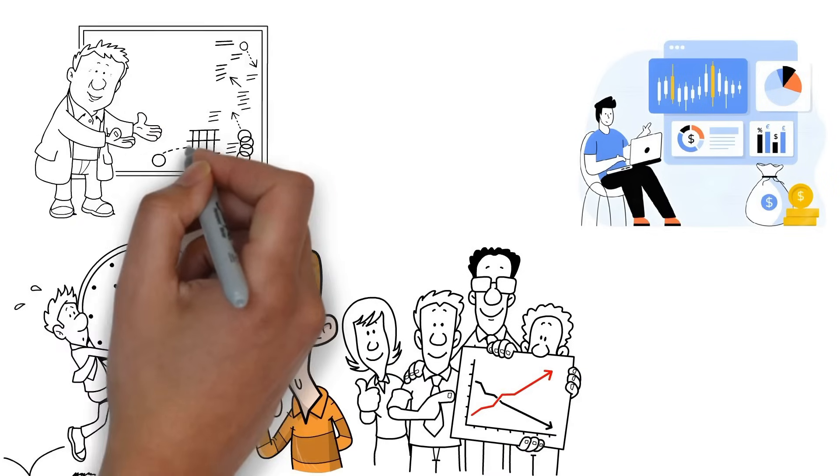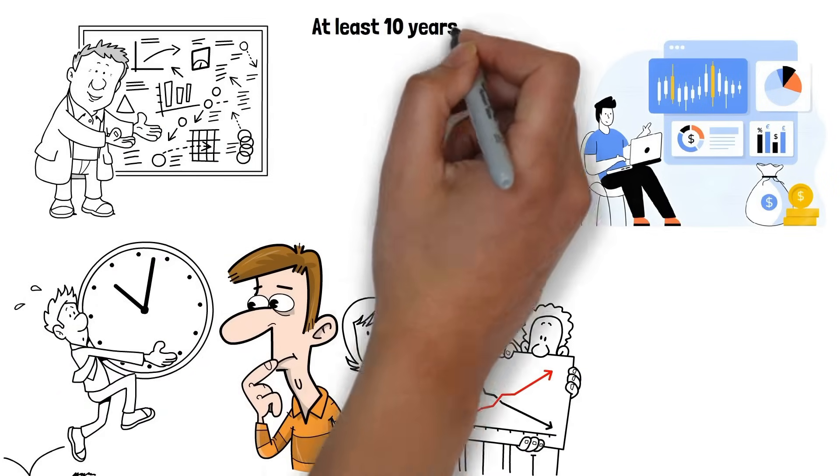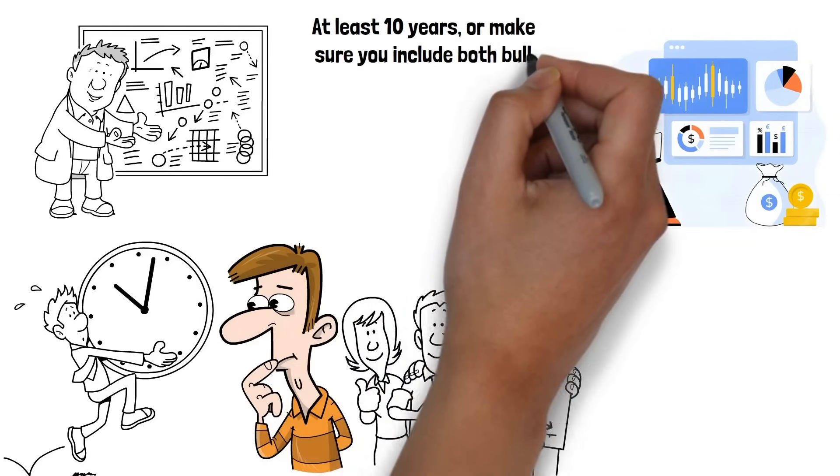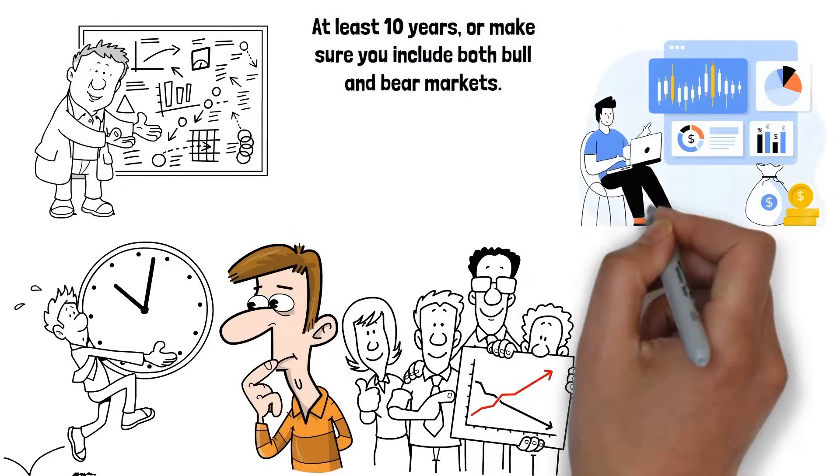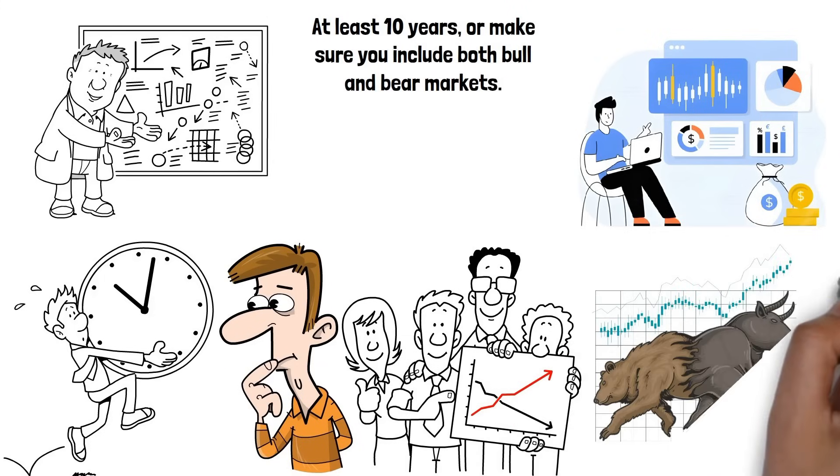A good rule of thumb is to backtest swing strategies at least 10 years or make sure you include both bull and bear markets. This captures various market conditions from bull runs to corrections, offering a more well-rounded picture.